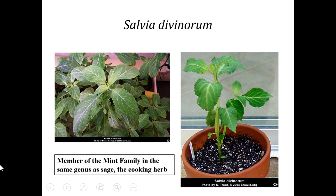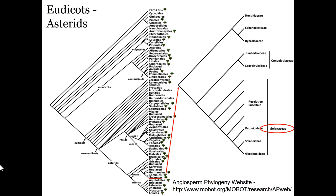There is one plant in this family with particular hallucinogenic properties: Salvia divinorum, which is native to Mexico. It's a member of the mint family, so it has opposite leaves and square stems. It's in the same genus as the culinary sage used for cooking meats. We'll discuss this plant more when we get to medicinal and hallucinogenic plants.